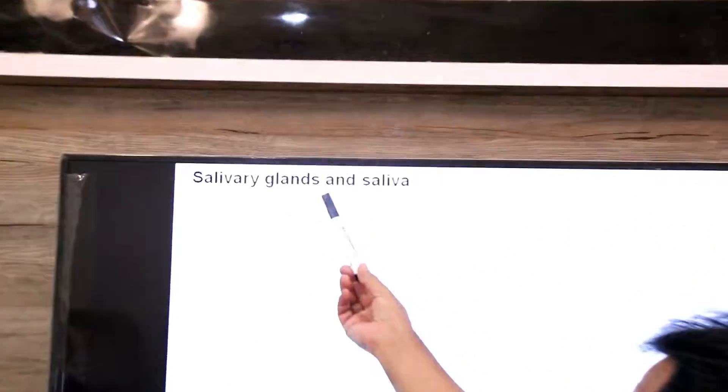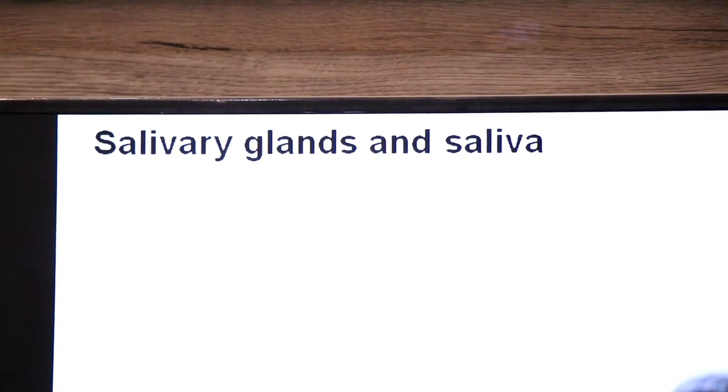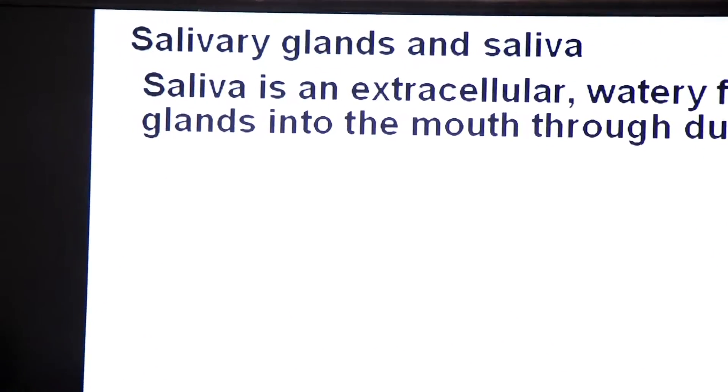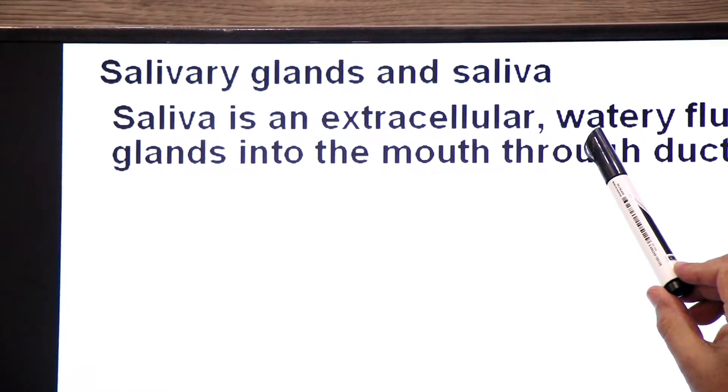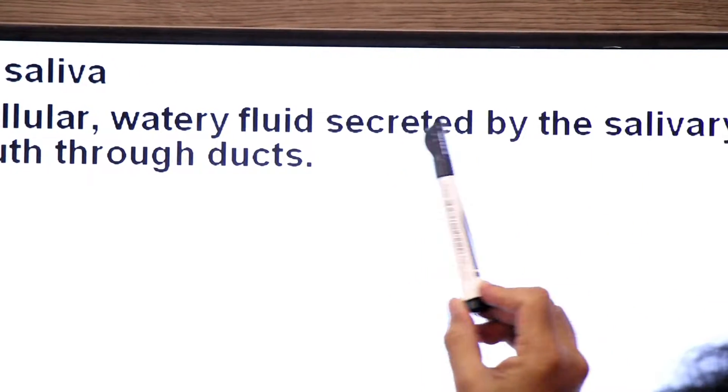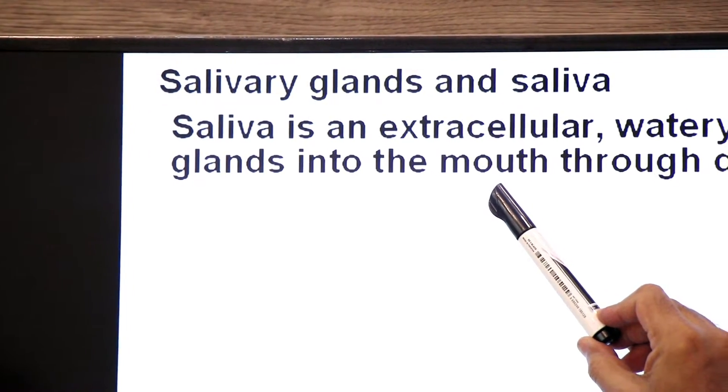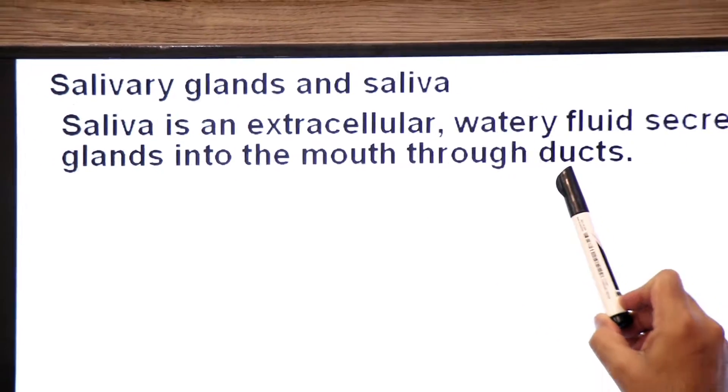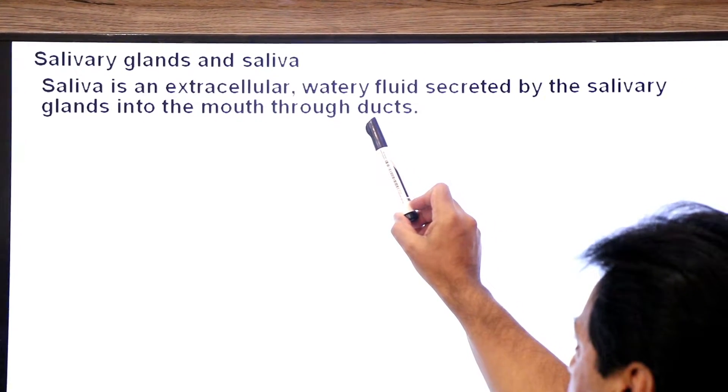Today we are going to learn about salivary glands and saliva. Salivary glands are exocrine glands — glands which give out their secretion by way of ducts. They secrete an extracellular fluid known as saliva into the oral cavity. Saliva is an extracellular watery fluid secreted by salivary glands into the mouth through ducts.